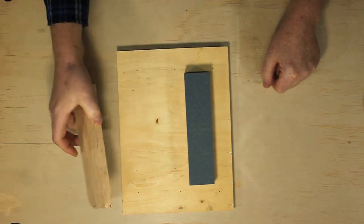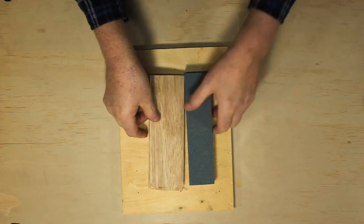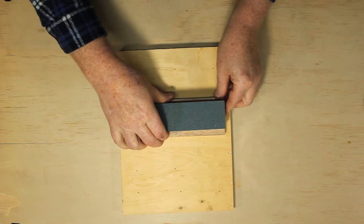The strop is going to be a piece of leather glued to a board, so the first thing I'm going to do is cut the board to the same length as the stone.